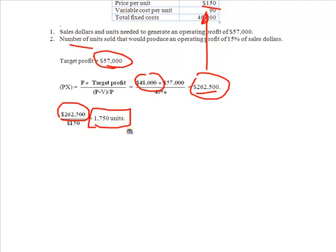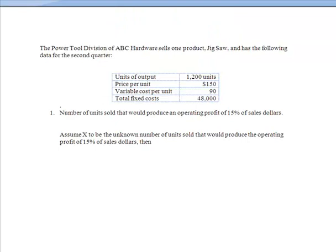Now let's look at the number of units that will produce an operating profit of 15% of sales dollars. I'm going to assume X to be the unknown number of units, because X is always my units of output. But at this point I'm solving for the unknown number of units. I'm going to assume X to be that unknown number that will produce an operating profit of 15% of sales dollars. Based on that, I'm going to set it up just like an algebra equation.